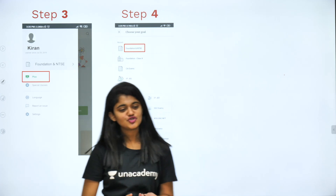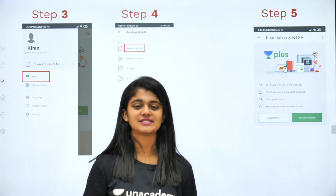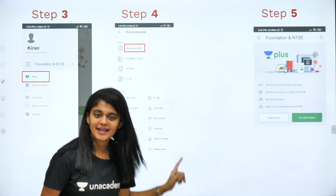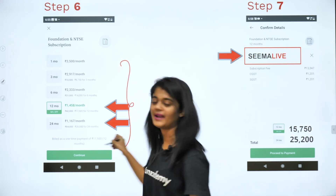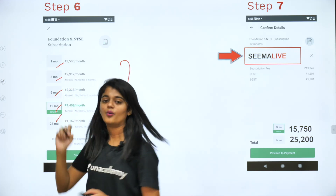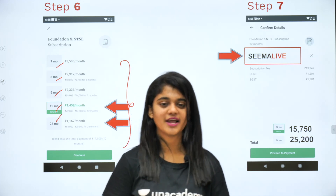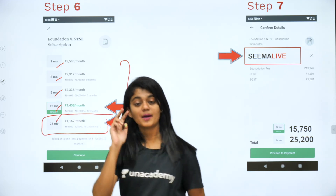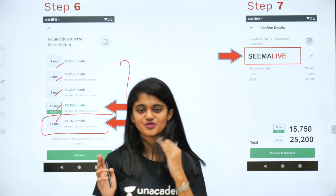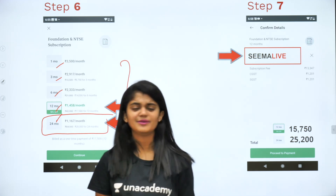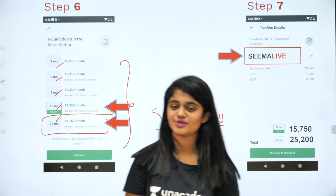In the Plus section, choose your goal — select Foundation and NTSE. If your fundamentals are already strong, options like IIT JEE and NEET are also available. Click on 'Get Subscription' to see all plans: one month, three month, six month, one year, and two year. Long-term plans are very reasonable price-wise. For a 9th standard student, a two-year subscription works out to less than 1,167 rupees per month — less than 50 rupees per day for quality education.